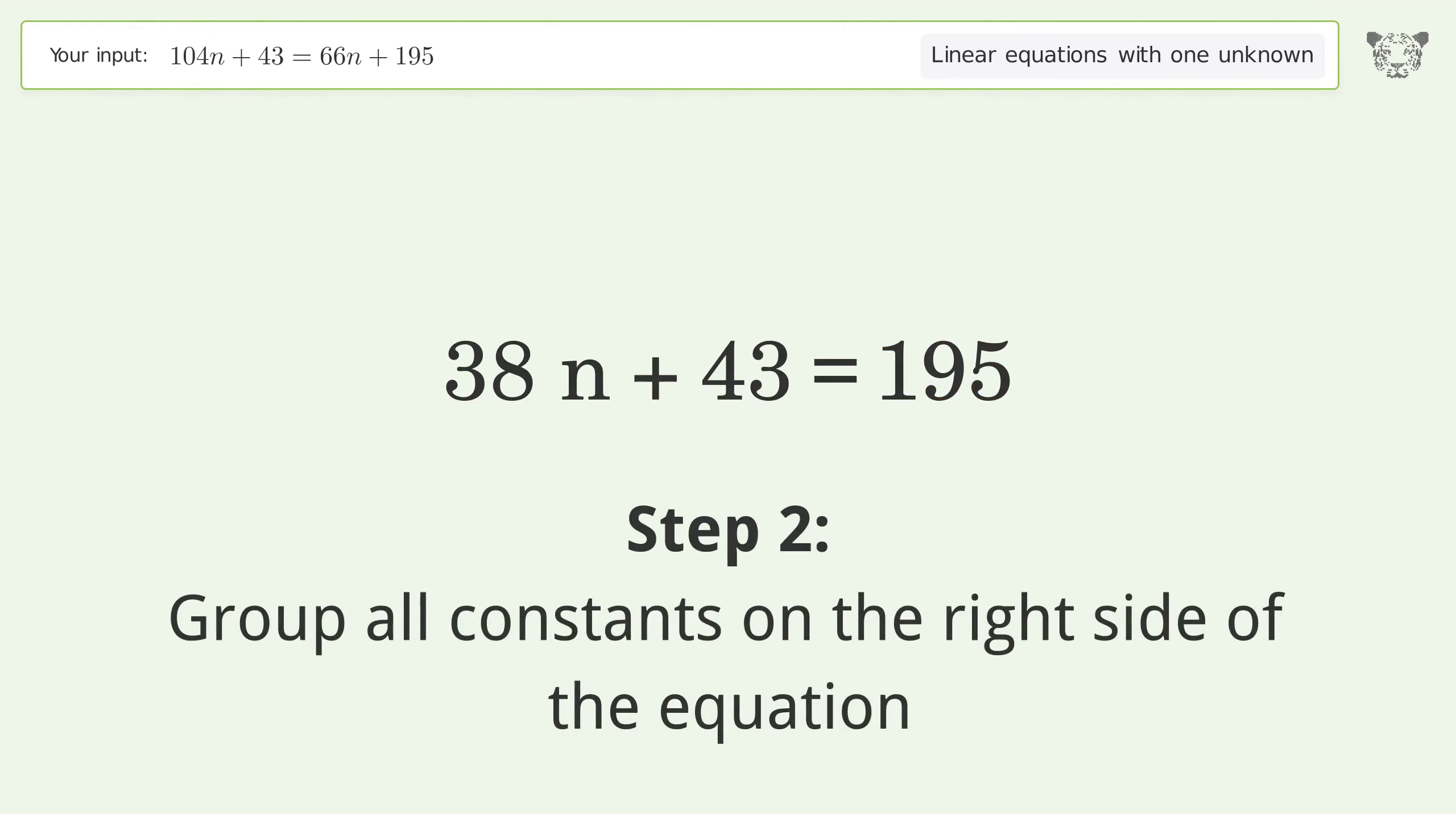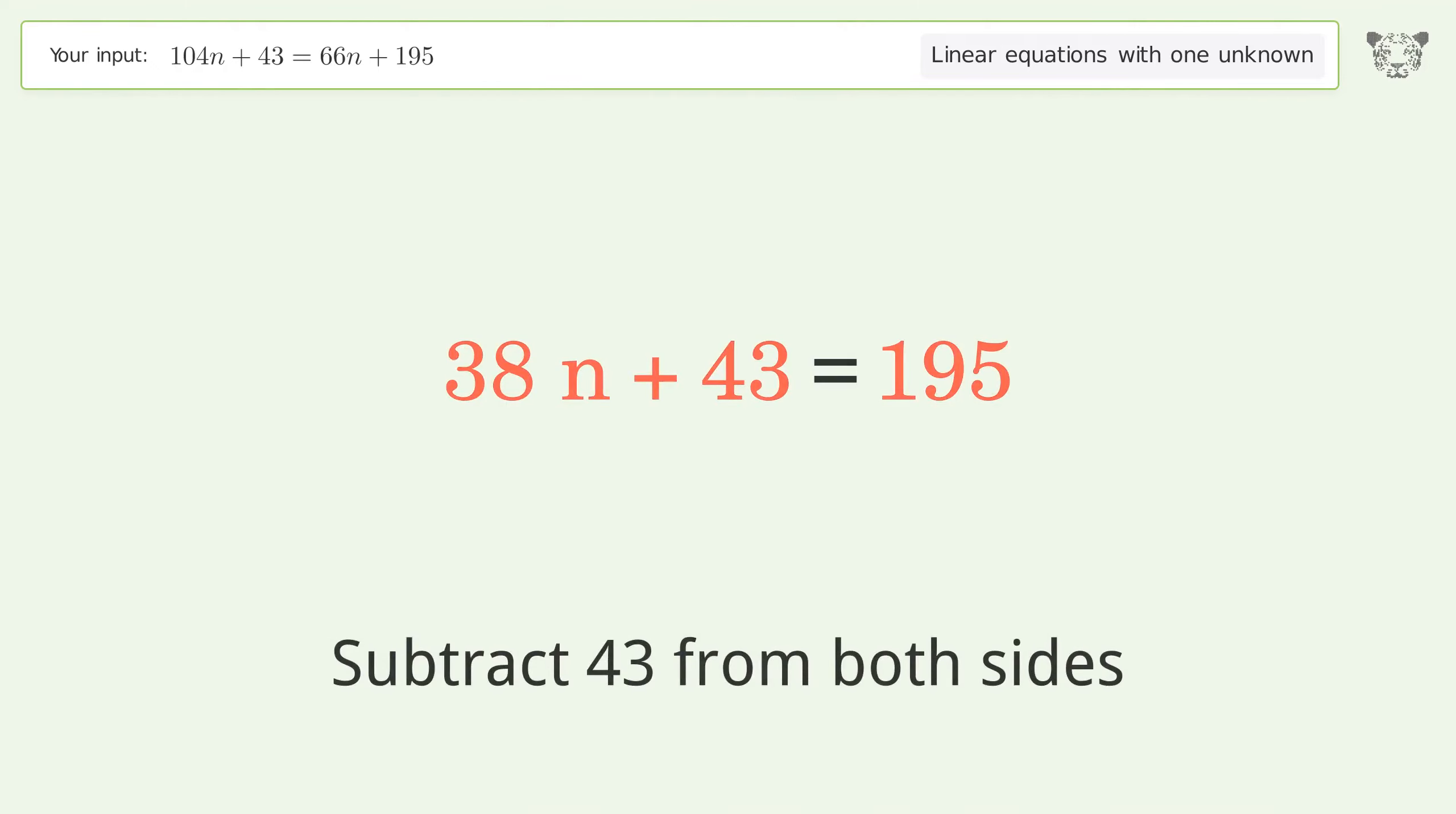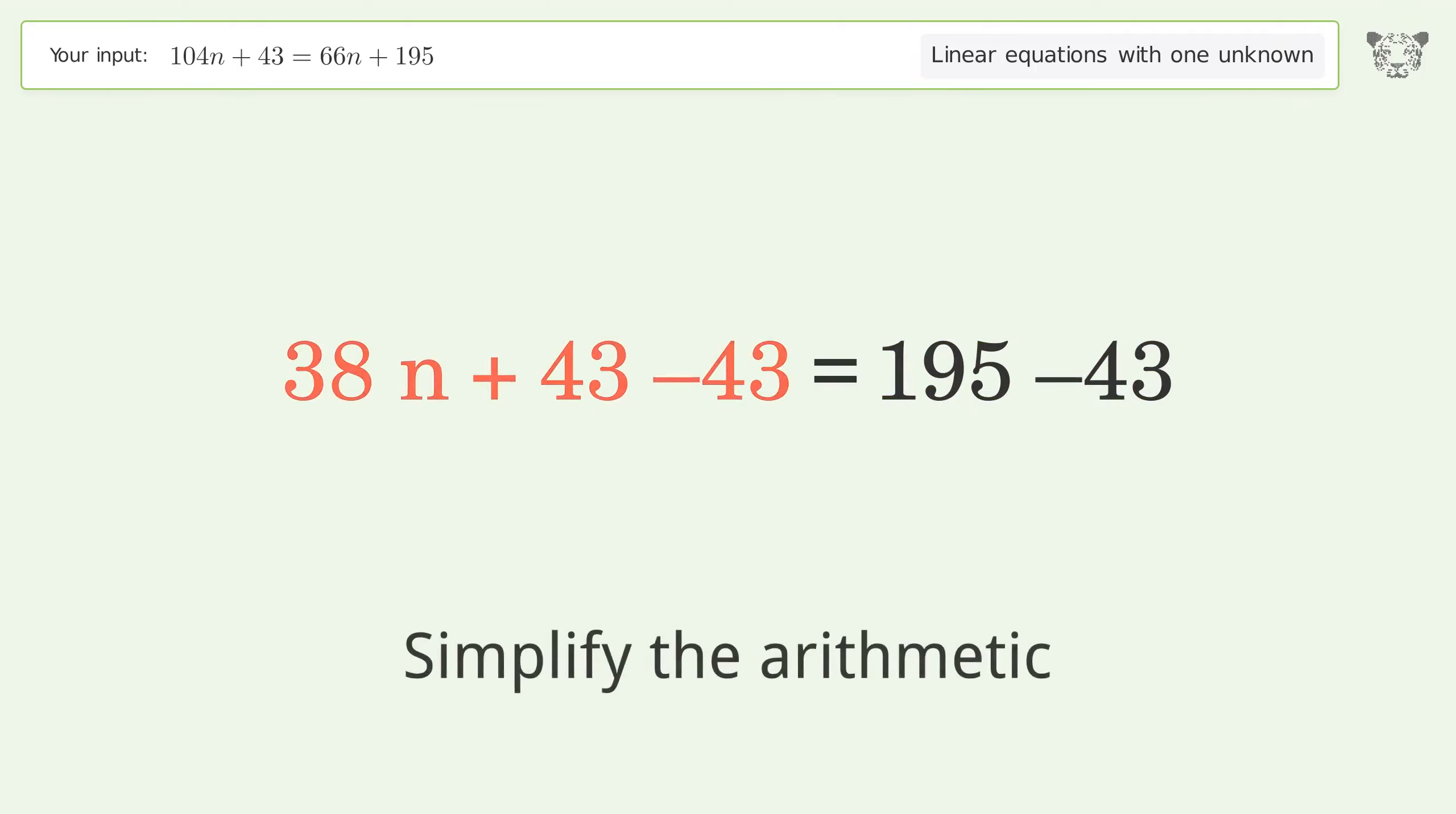Group all constants on the right side of the equation. Subtract 43 from both sides. Simplify the arithmetic.